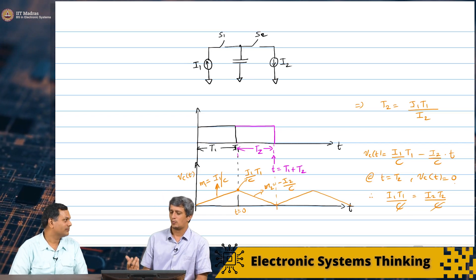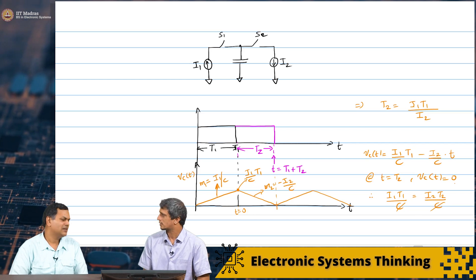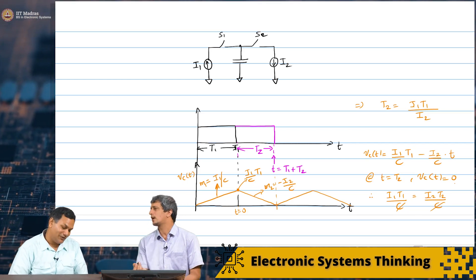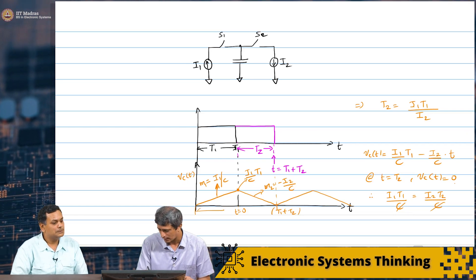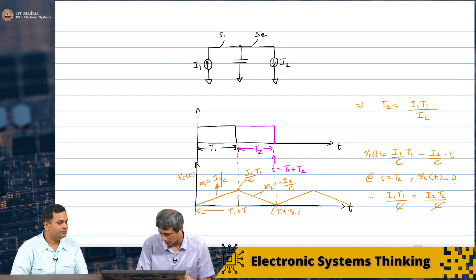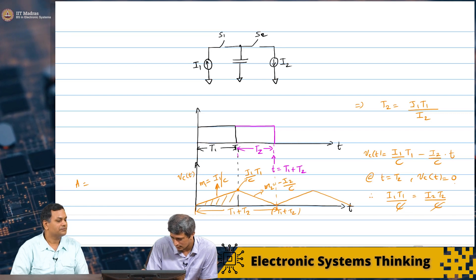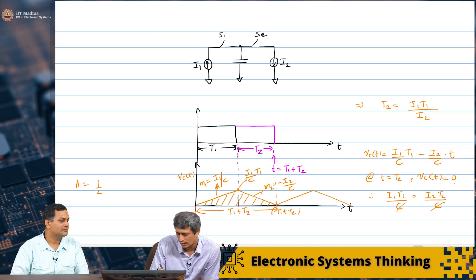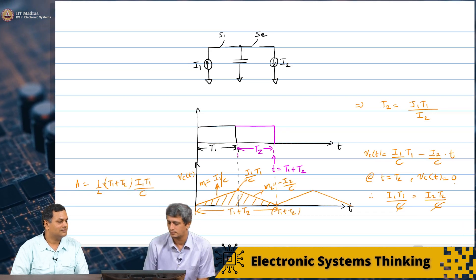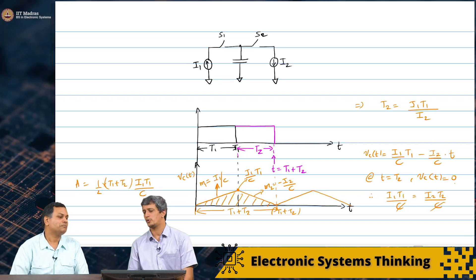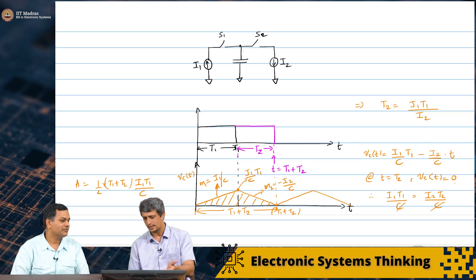If I ask you, what is the area under this curve? That is one question that we could just ask. What is the area under the curve? Well, it is just the area of this triangle. It is a basis T1 plus T2. Because again, if you look at this, this is T1 plus T2. And it is going to a maximum of I1 T1 by C. So, the area, this area, is simply half into T1 plus T2 into I1 T1 by C. And we also know what T2 should be from here. It is I1 T1 by I2. And therefore, you can plug that in and you can evaluate the exact expression for the area.